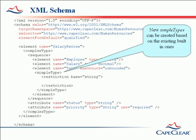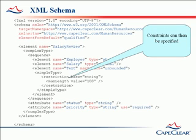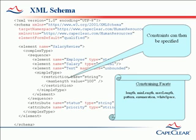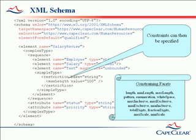New simple types can be created based on XML schema's built-in types. Here we see one declared based on the data type string. We do this in order to specify constraints on the value — in this case, we have specified that a text element can contain at most 100 characters. The set of ways in which we can constrain the value of a data type are known as the constraining facets. These facets can be applied to any values, but are commonly used with strings. We can specify maximum and minimum values for numeric data types, and they can also be used for any data types where there is a logical order, such as a date. Finally, there are a set of facets for use with decimal and floating point numbers.